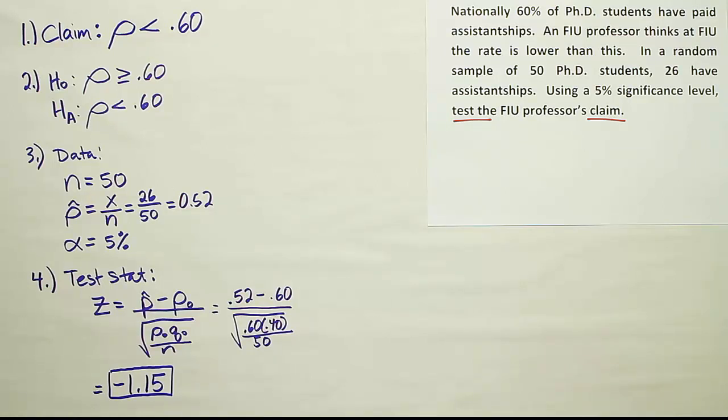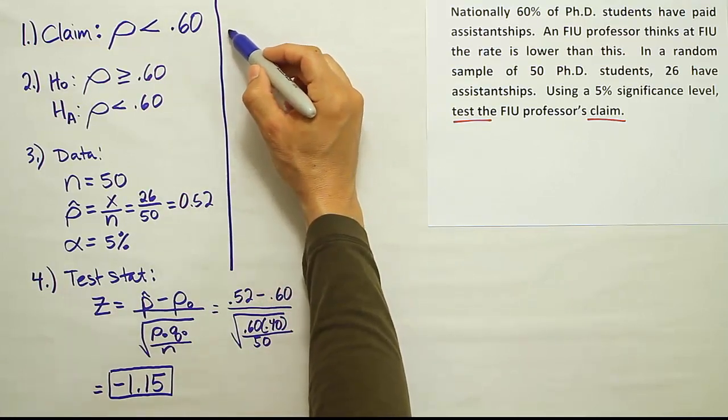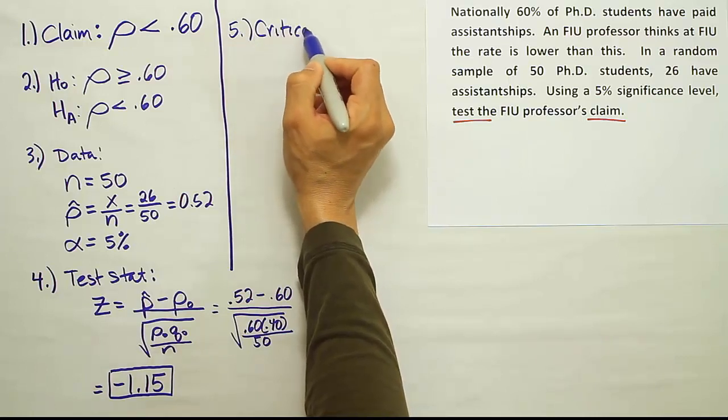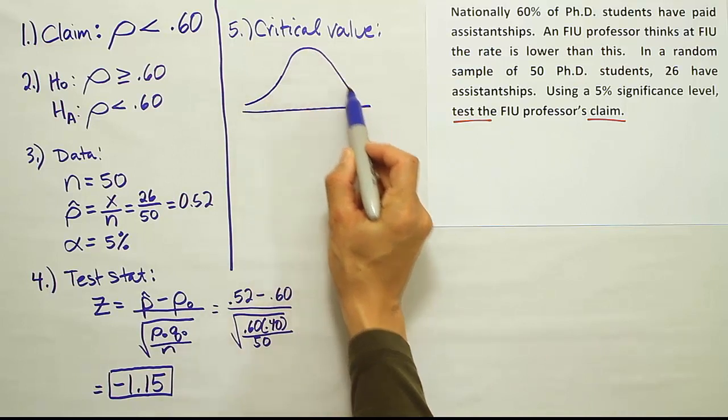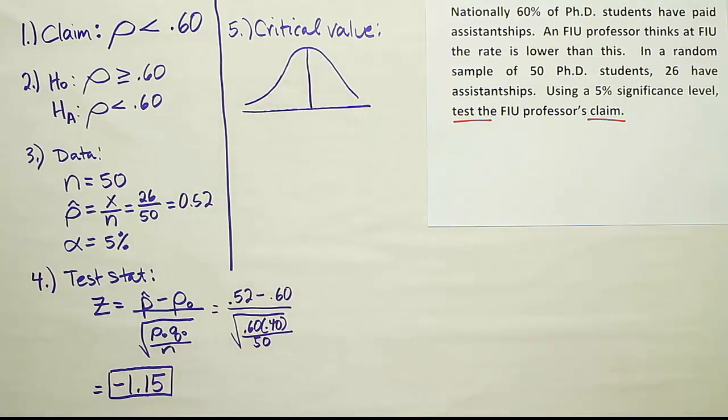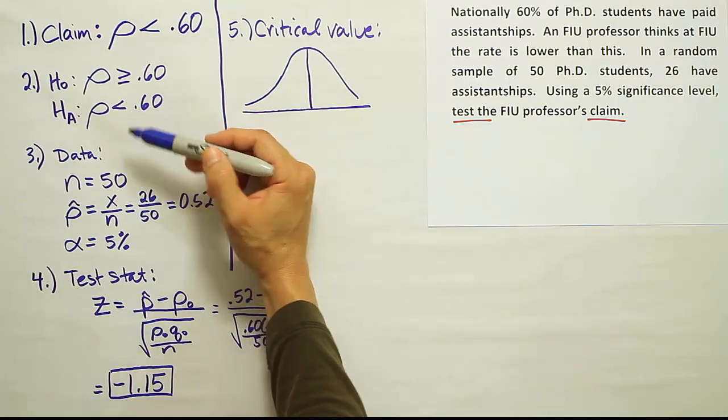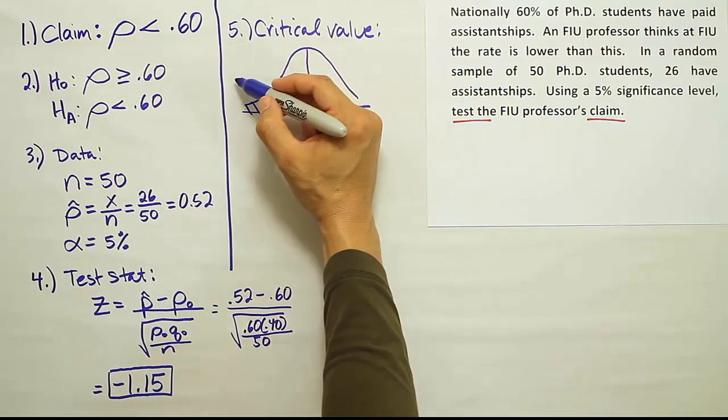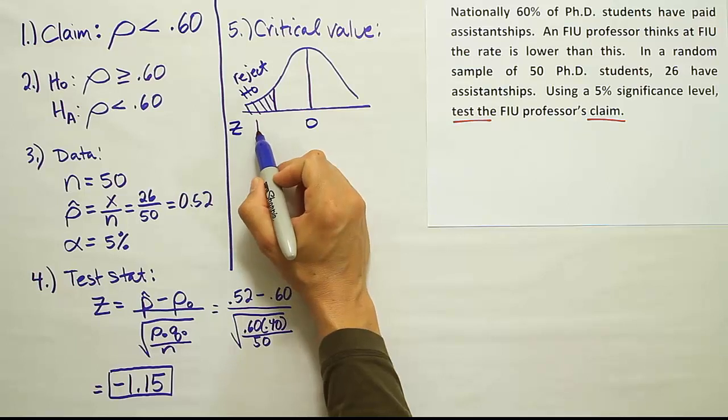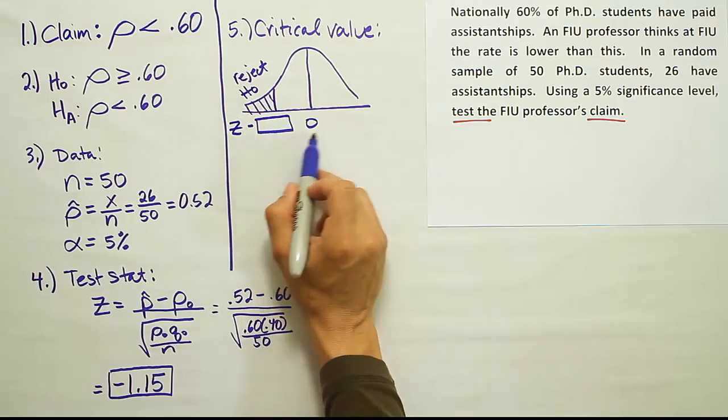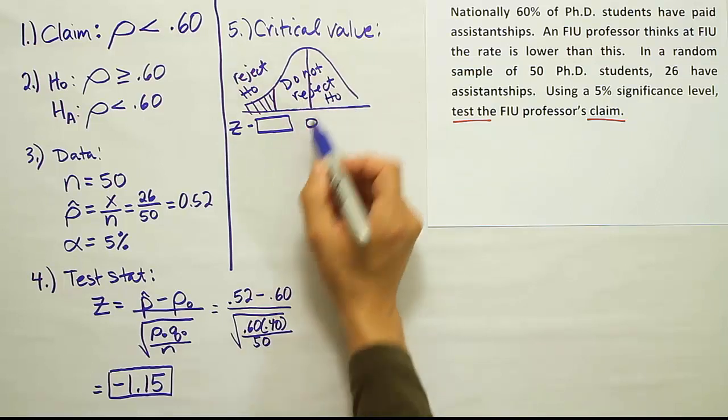From here, we're going to go get the critical value. This problem asked us to test the professor's claim. It didn't specify any particular technique, so we're going to use the traditional method of hypothesis testing. So let's get the critical value for this test. Let's draw the bell curve. And on that bell curve, let's label the tail or the rejection region for the problem. In this case, we're looking at HA to determine that. It has a less than symbol. Recall that less than symbols in HA imply that it's a left tail test. So we're going to highlight the left tail here and say that that's our rejection region. If our test stat should land over here on the number line, we will reject H0. Our goal is to figure out where that region begins. Remember that it will be negative because it's on the left of 0. Inside here, of course, we will not reject H0.